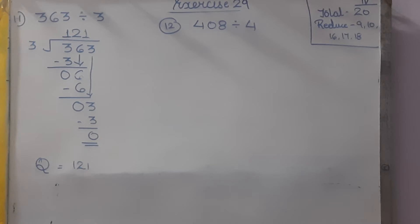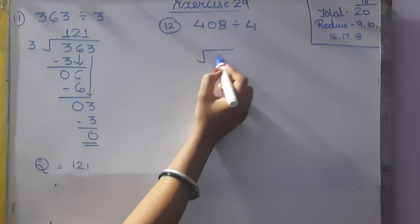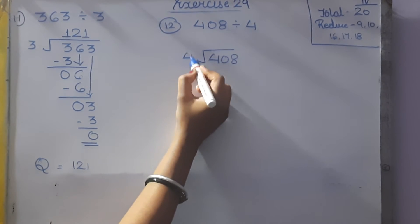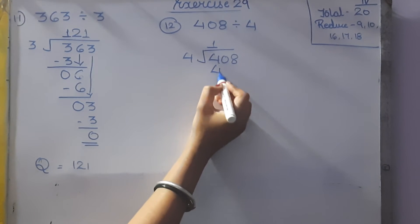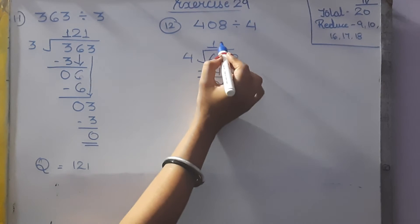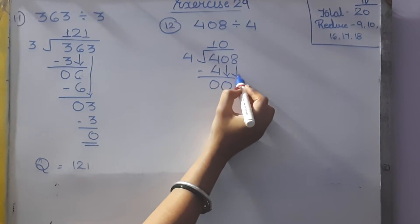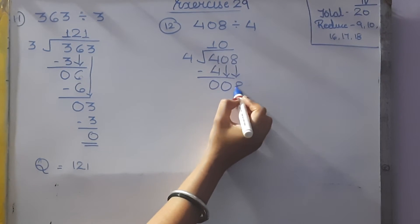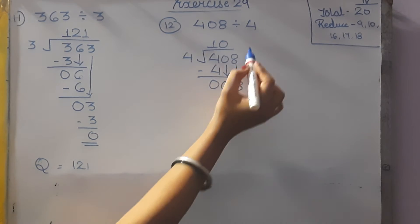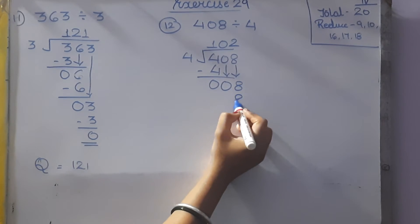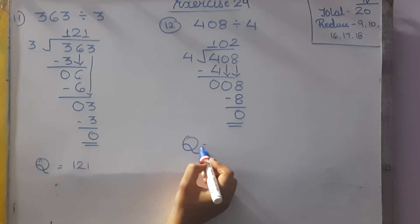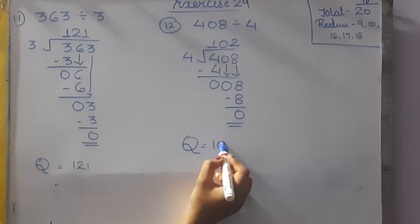Next: 408 divided by 4. 4 ones are 4, so 4 minus 4 is 0. Bring down 0. You can put 0 here. Bring down 8. 4 twos are 8, so 8 minus 8 is 0. The quotient is 102.